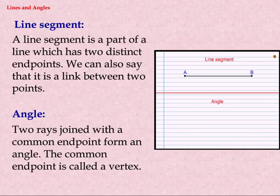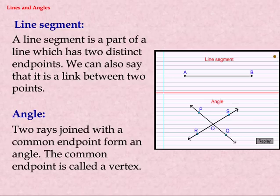Line Segment. A line segment is a part of a line which has two distinct end points. We can also say that it is a link between two points.